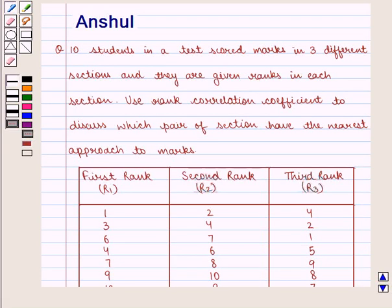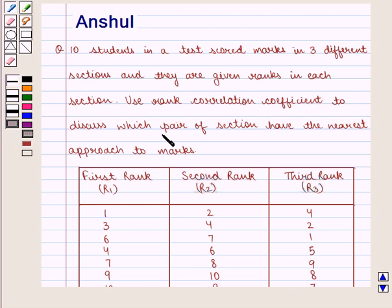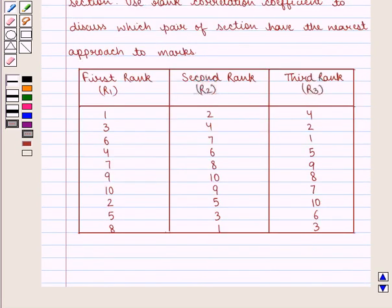Hello and welcome to the session. In this session we are going to discuss the following question: 10 students in a test score marks in 3 different sections and they are given ranks in each section. Use the rank correlation coefficient to discuss which pair of sections has the nearest approach to marks, and the rank distribution is given as follows.